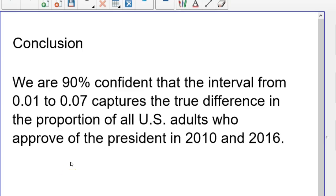So we are 90% confident that the interval from .01 to .07 captures the true difference in the proportion of all U.S. adults who approve of the President in 2010 and 2016. And probably should be a little more specific and put in the January 2010 and January 2016. So hope this helps you out. But I kind of got away from doing this by hand, just to show you the technology side of things. And how you can do it with a free online tool. Or do it with your rather high priced calculators. So see you next time. And hope this helps.